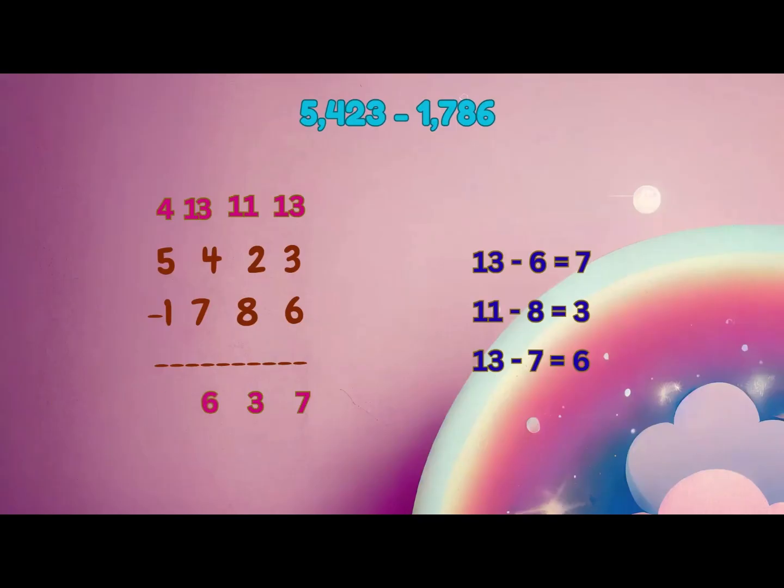Look at thousands place, 4 minus 1 is equal to 3. So the answer is 3637.